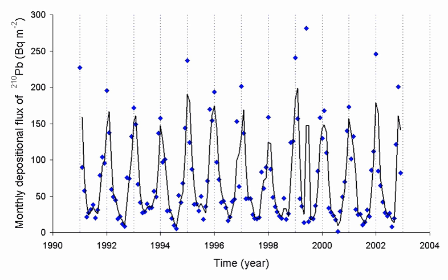Radon was the fifth radioactive element to be discovered, in 1899 by Ernest Rutherford and Robert B. Owens, after uranium, thorium, radium and polonium. In 1900, Friedrich Ernst Dorn reported some experiments in which he noticed that radium compounds emanate a radioactive gas he named radium emanation. Before that, in 1899, Pierre and Marie Curie observed that the gas emitted by radium remained radioactive for a month. Later that year, Robert B. Owens and Ernest Rutherford, at McGill University in Montreal, noticed variations when trying to measure radiation from thorium oxide.